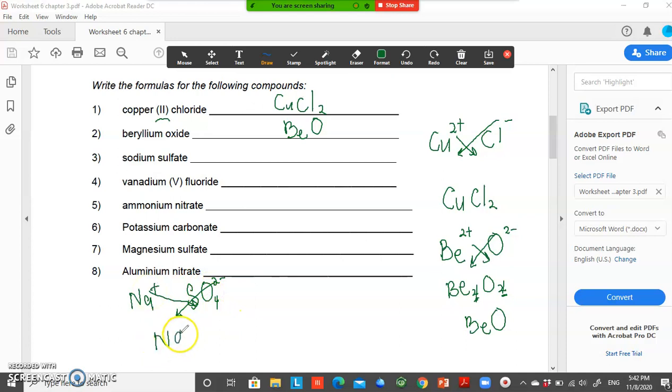Therefore, the formula will be Na2SO4. This is the formula for sodium sulfate.